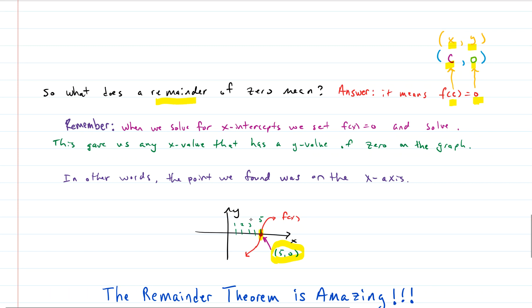So a remainder of 0 means you have found an x-intercept. That c that you're playing with is an x-intercept. Because remember, that's all you do. When you solve for x-intercepts, all you're doing is setting the function equals 0 and then solving for the x that makes it 0. In other words, a remainder of 0 was just finding an x-intercept.